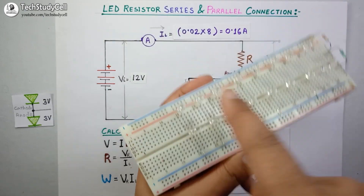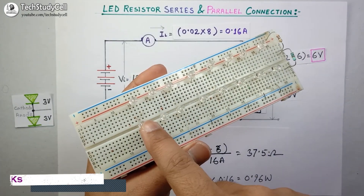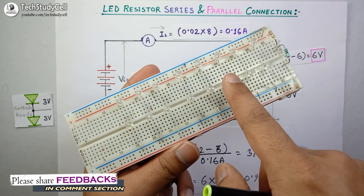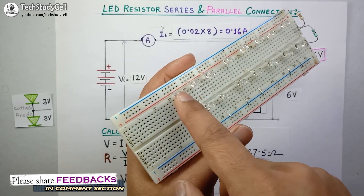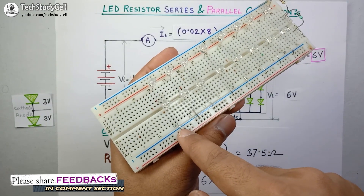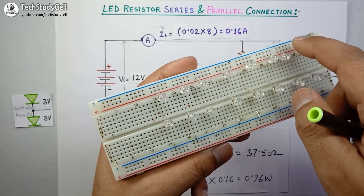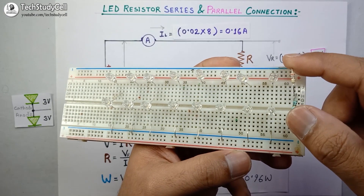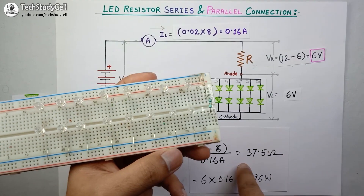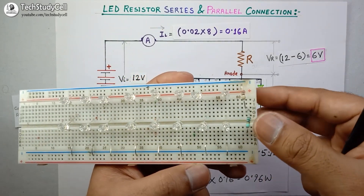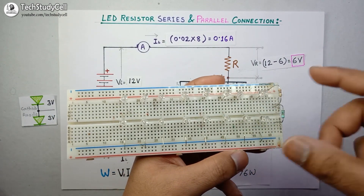As you can see, I have built this circuit on a breadboard. Here you will find 8 parallel strings, and each string contains 2 LEDs in series. This is the ground terminal and this is the positive terminal. I am using 2 resistors — a 10 ohm and a 27 ohm in series — to get a total of 37 ohms, approximating the required 37.5 ohms. Now we will connect the supply to this circuit and observe the readings on the multimeter.